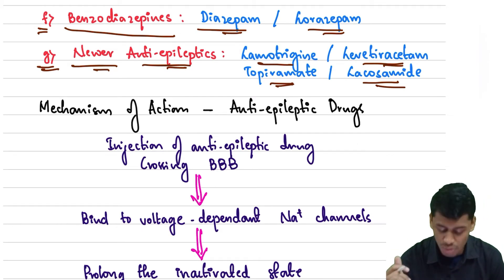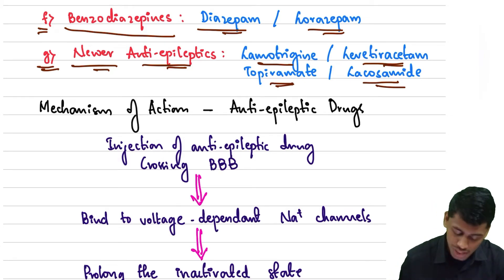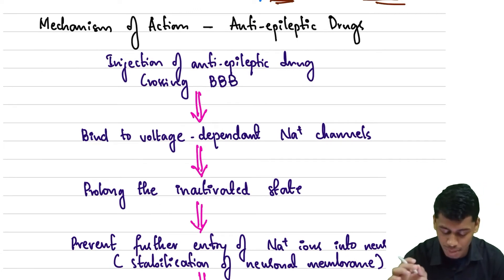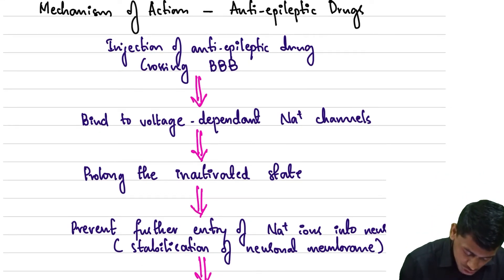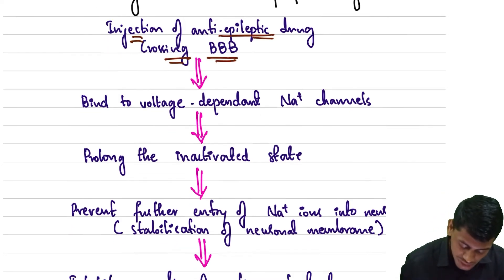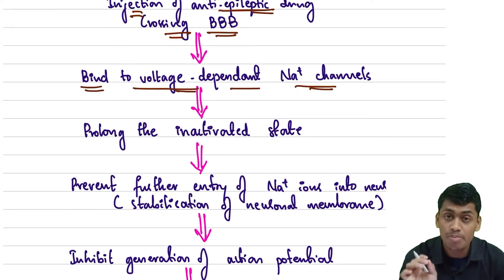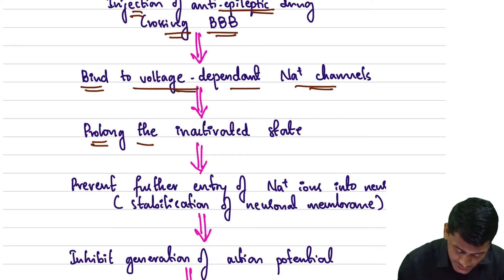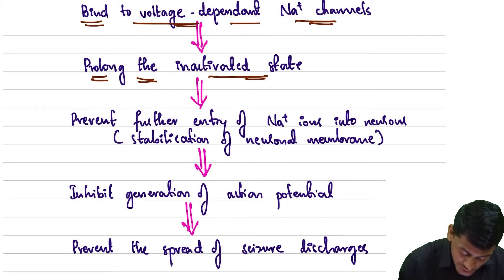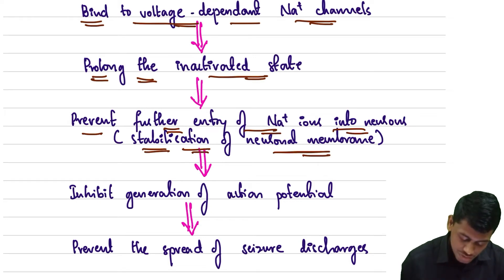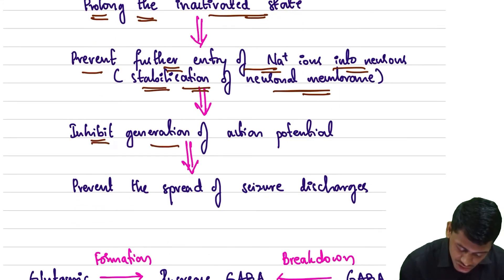The mechanism of action of anti-epileptic drugs is very important. Following administration, the drug crosses the blood-brain barrier and binds to voltage-dependent sodium channels in the brain. It prolongs the inactivated state of the sodium channels, preventing further entry of sodium ions into the neurons by stabilizing the neuronal membrane. This inhibits the generation of new action potentials and prevents the spread of seizure discharges.